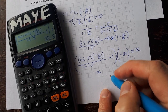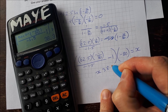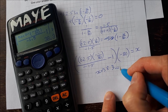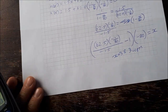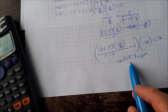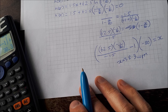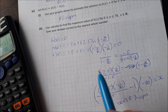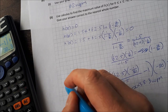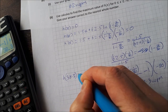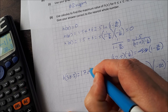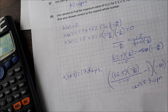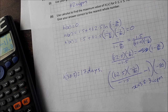So x = 38.3 words per minute. To find the maximum value of h(x), substitute 38.3 into the function h(x), which gives 17 days. That's the maximum value of h(x) to the nearest whole number. Thanks for watching — if you have any questions, just ask in the comments below and I'll see you in the next video.